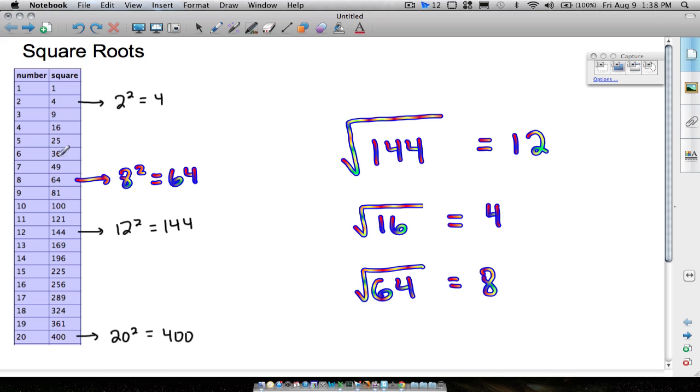These are some that you would like to know right off the top of your head, 1 through 20. You could go even higher. I mean, these numbers go on forever. But some common ones you do see are these right here, between 1 and 20. So that's basic square roots. And that's it for this video. Hope it helped.